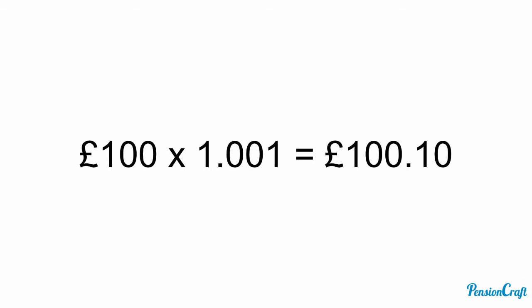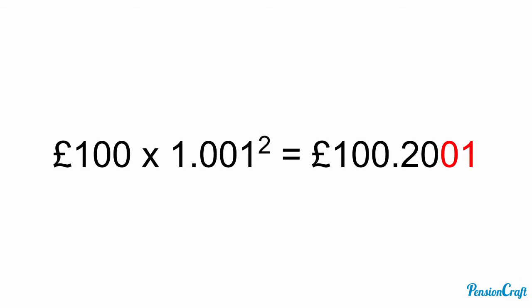So let's follow this day by day. On the first day we receive 10 pence. On the second day we receive 20 pence plus that extra 0.01 pence. On day three we have 30 pence plus 0.03 pence because of the compounding. On day four we have an extra 0.06 pence.